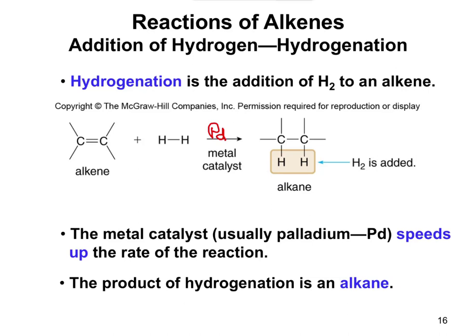In this hydrogenation reaction, we're breaking the double bond. Now you have a single bond, and you draw two new bonds. In this case, the two new bonds go to H and H, and you end up with an H on either side. The product of a hydrogenation reaction is going to be an alkane, because you're losing the alkene — the double bond — and making an alkane, which is a single bond.